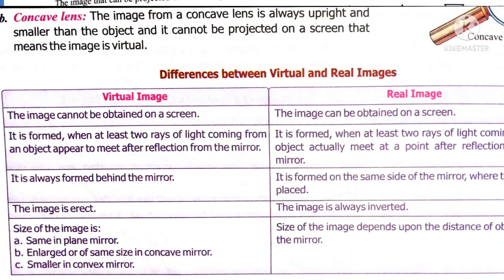You are going to study only concave mirror and convex lens. If you study this one, you can write about convex mirror and concave lens. Convex mirror and concave lens images are always upright but smaller than the size of the object. These images cannot be obtained on the screen, so they are virtual images. Virtual image is not obtained on the screen, but real image is obtained on the screen. Virtual image always forms behind the mirror, whereas real image is formed on the same side of the mirror.